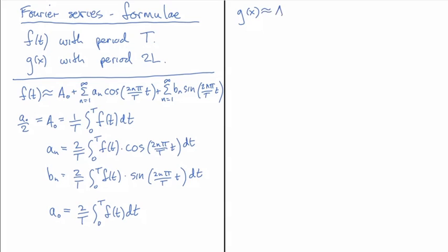I'll write it with the same coefficients, but now you'll see that I have an L in there, cosine of n pi over Lx.